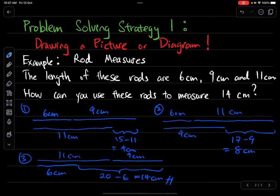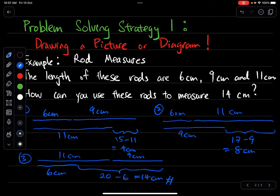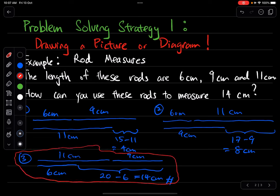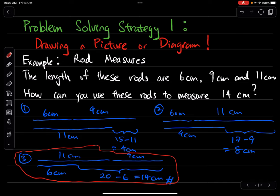This setup will be my answer. My answer will be setup number 3. For this question, I will do it by lining 11cm and 9cm on one side and 6cm on the other side. Then I can use this to measure 14cm. This is problem solving strategy number 1: drawing a picture or diagram. This is the second example, rod measures. Thank you.